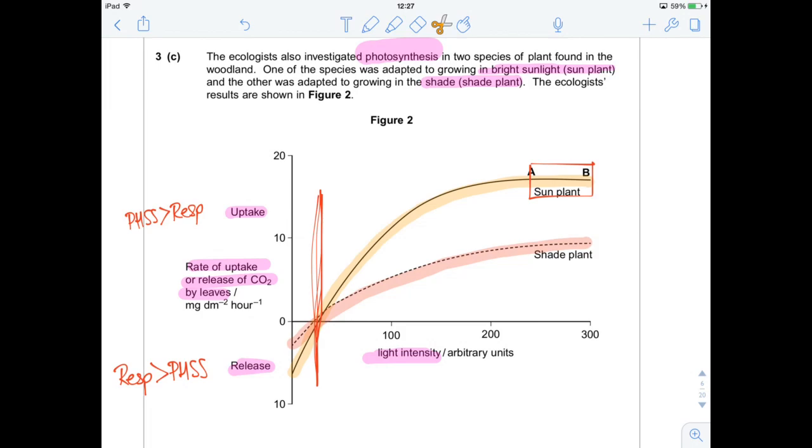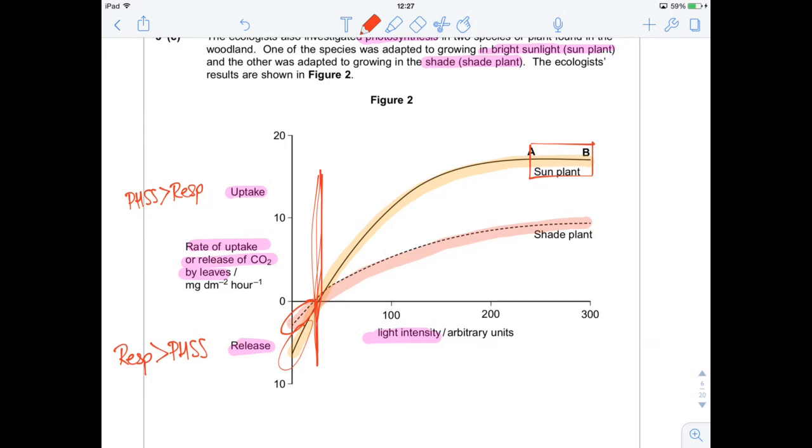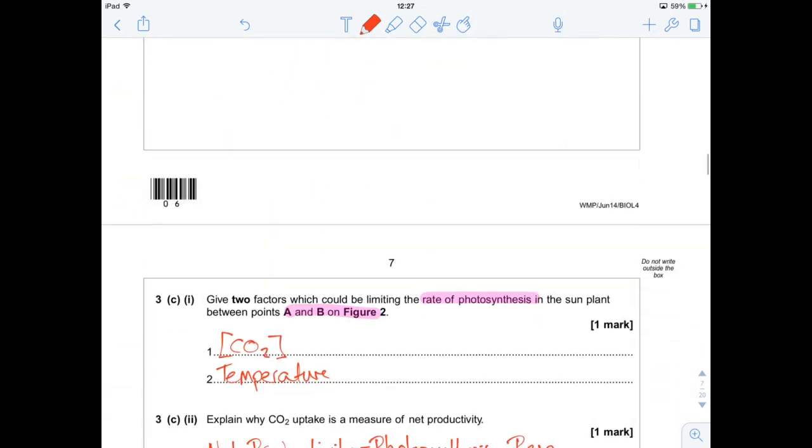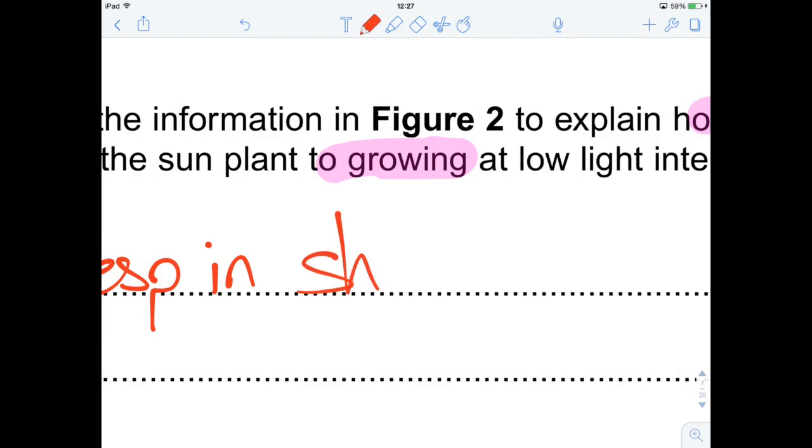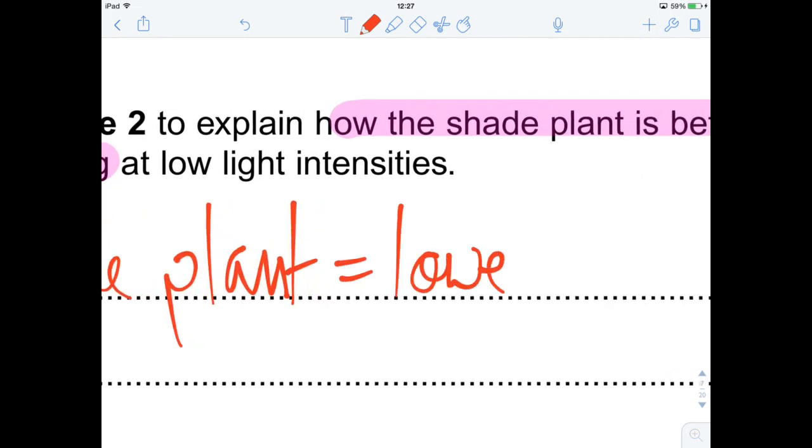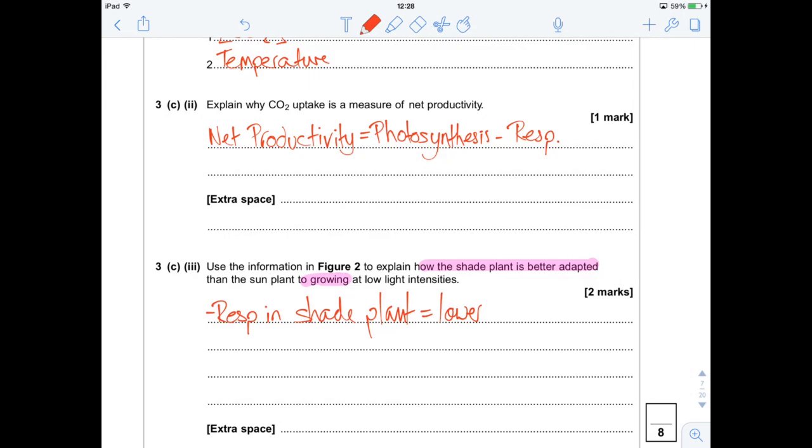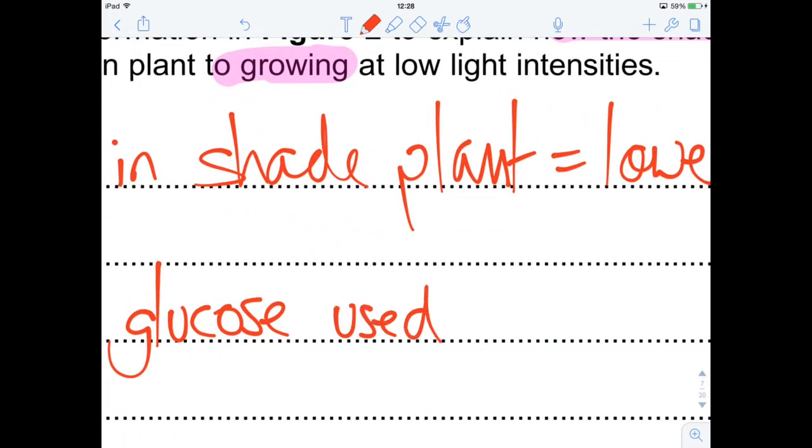We see that in the shade plant, much less carbon dioxide is being released compared to the light plant. Basically, what this is meaning is that the shade plant is doing much less respiration. So, respiration in the shade plant is lower at low light intensities. And if the respiration rate is lower, that means you're going to be using less of your sugars to produce your energy. So, less glucose is used. And if you've got more glucose kicking around, you can do more growth and increase your net primary productivity. That will do it for two marks.